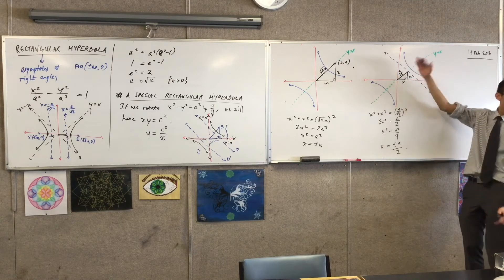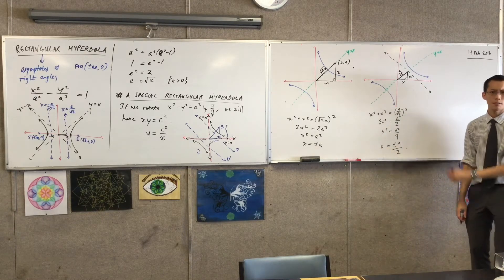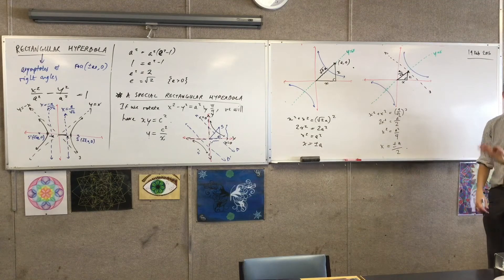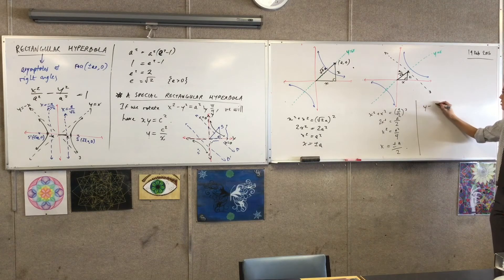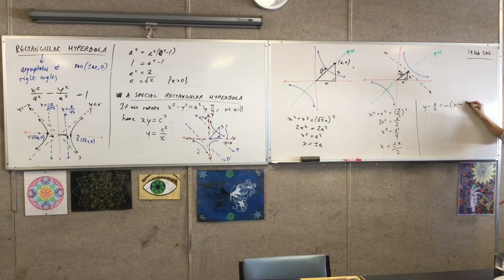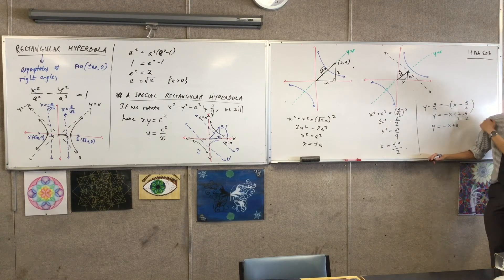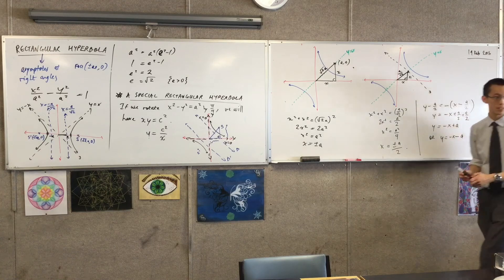That should make sense, because the directrix is so much closer than the focus — in fact, it's exactly half. So now I know the coordinates at that point: it's (a/2, a/2). I'm going to put that into point-gradient form: y minus the y-coordinate equals the gradient, which is minus one, times (x minus x₁). It just pops out like this — minus x plus a/2 plus a/2. So y equals minus x plus a. And of course I've got its cousin going the other way: y equals minus x minus a.